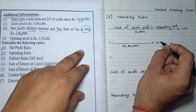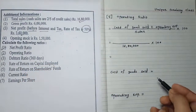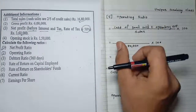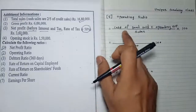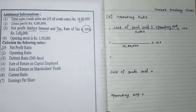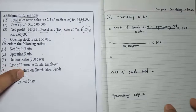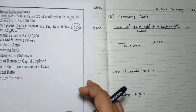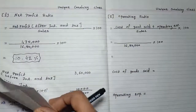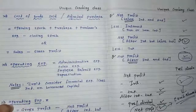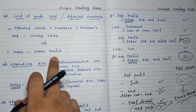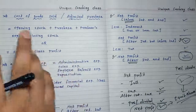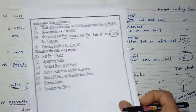We need sales, cost of goods sold, and operating expenses. Sales we already have — 16,18,000. For cost of goods sold, you must remember its formulas. Formula one: opening stock plus purchases plus purchase-related expenses minus closing stock. Formula two: sales minus gross profit. Which one to apply depends on the available information.